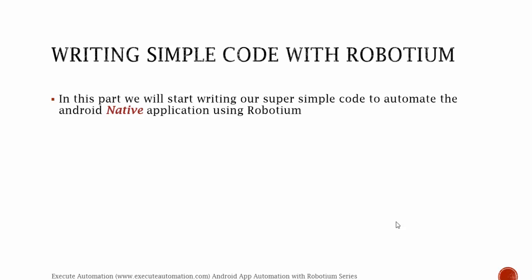So we'll start writing our super simple code to automate Android's native application using Robotium. We have partially done some object identification and performed some typing operations using Robotium in our application under test. We will also try to identify some other controls and perform the rest of the operations, to make sure all controls are identified and we can perform the intended operations.